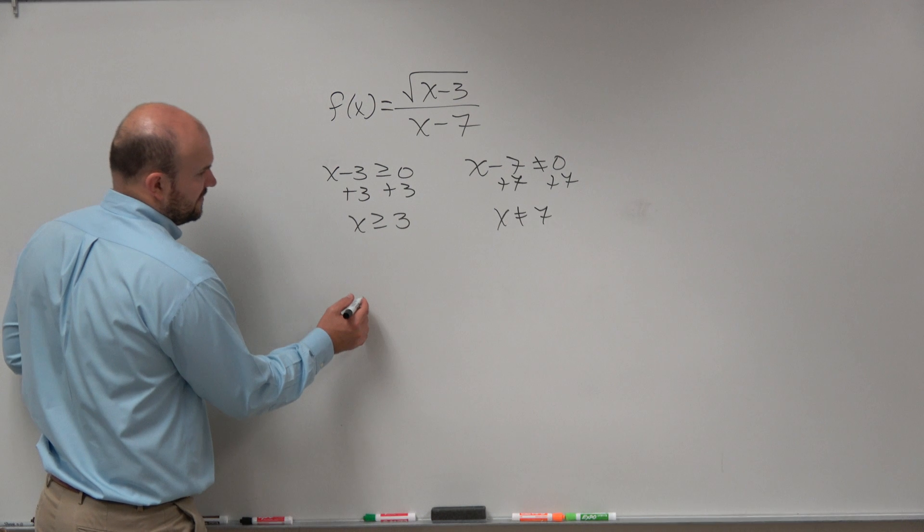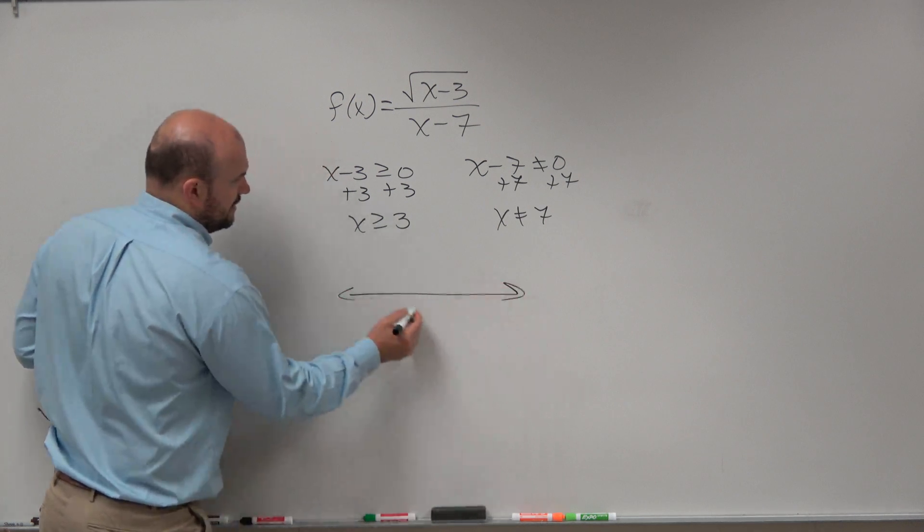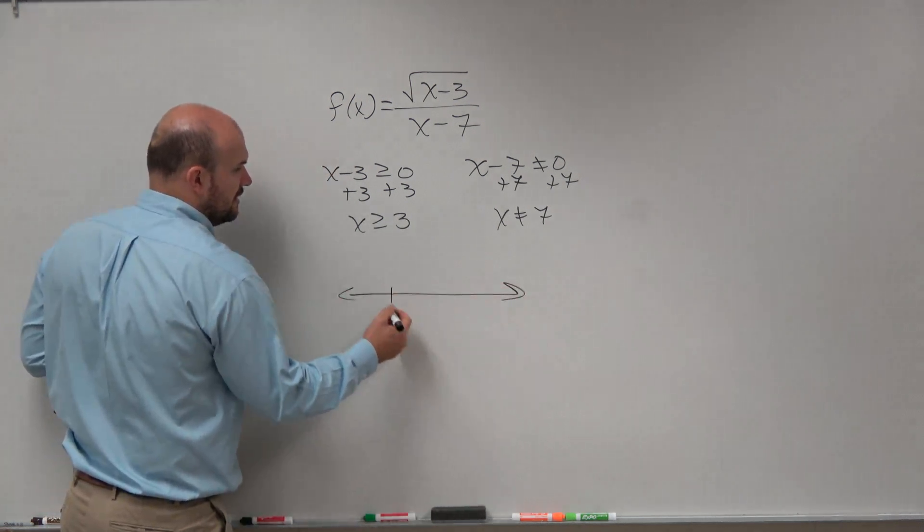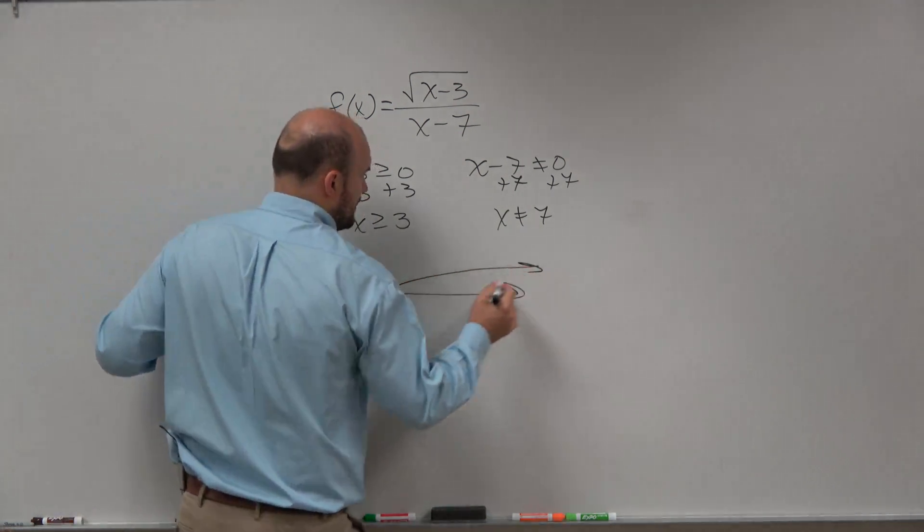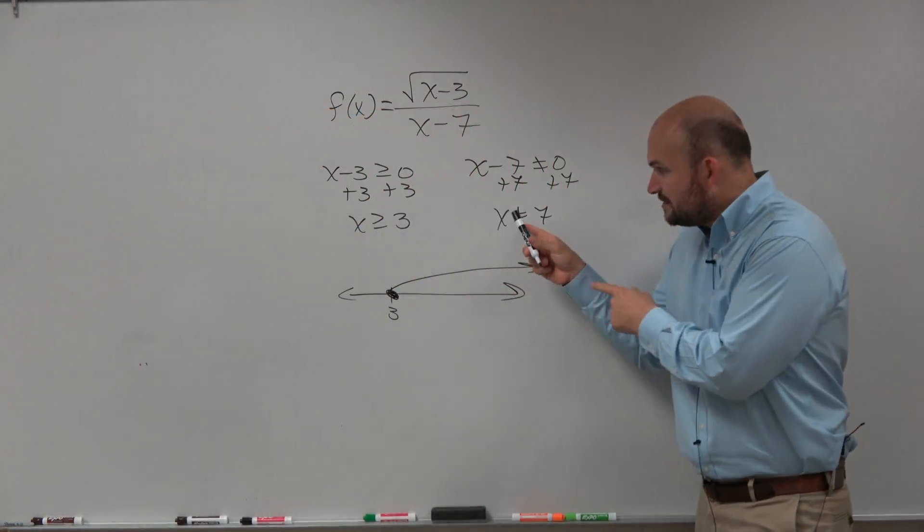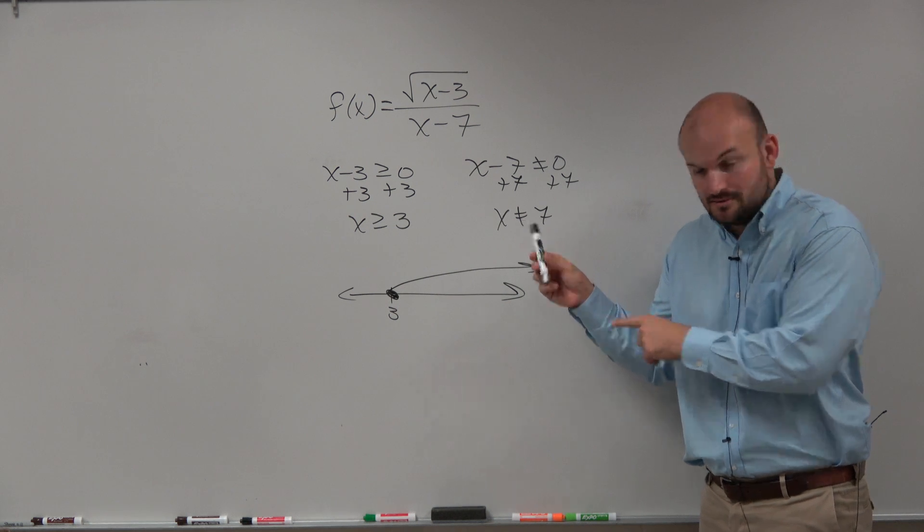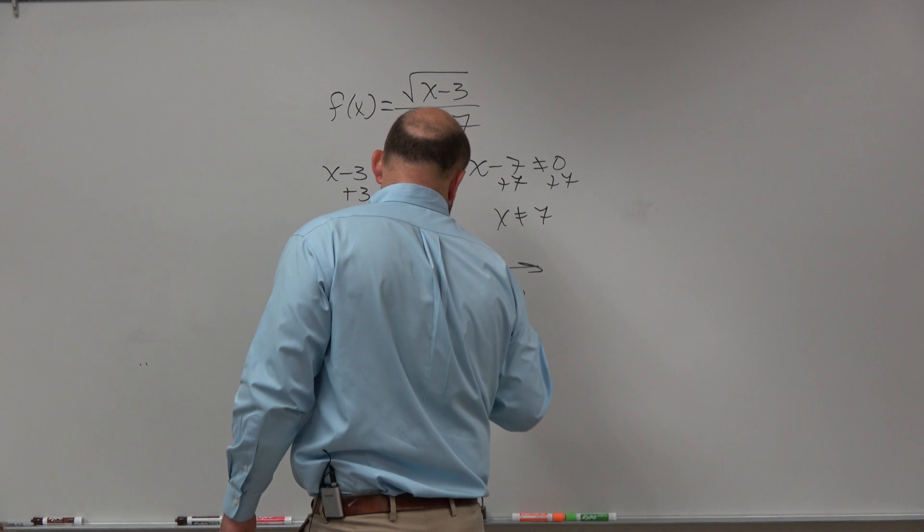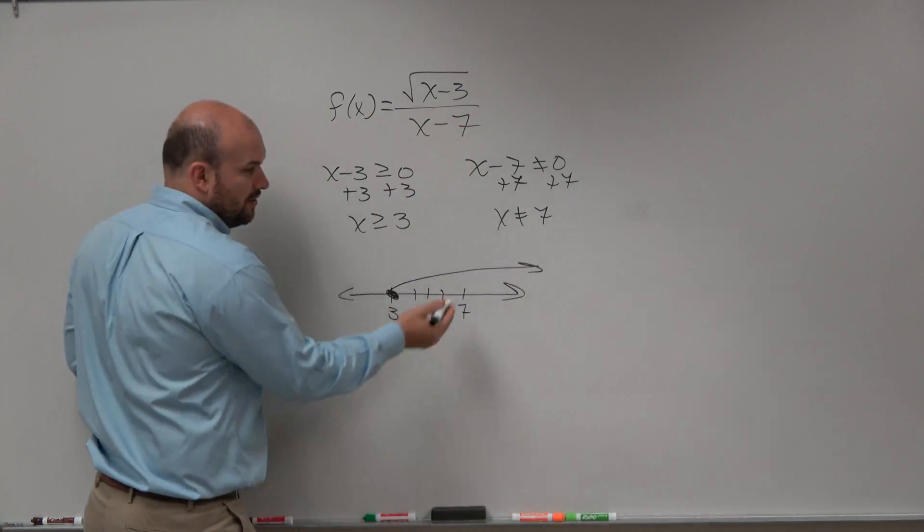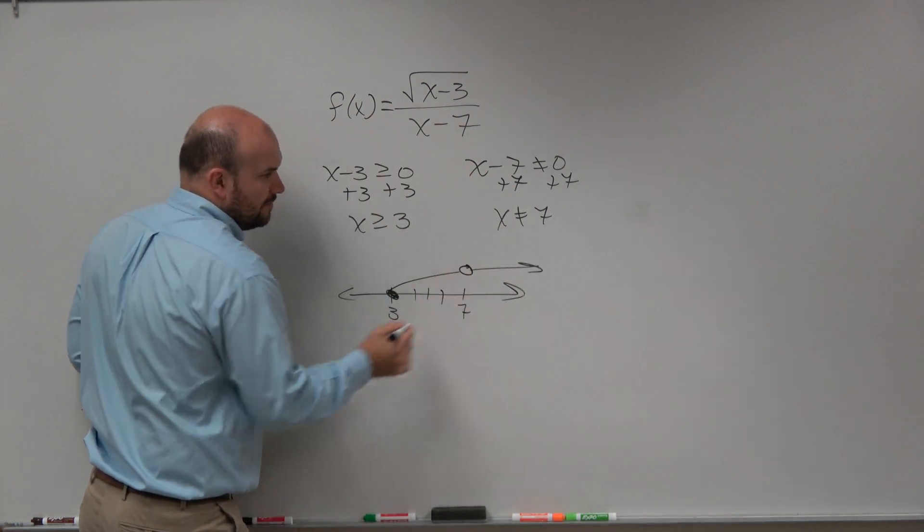So let's do a little graph here. If here's 3, well if x is greater than or equal to 3, so it's a solid dot going right there. But then we have this number 7 it can't equal to. Right? So 4, 5, 6, 7. So right here, we have this little hole.